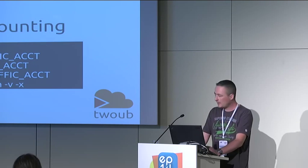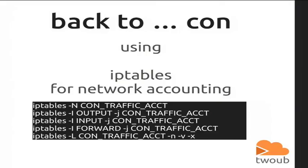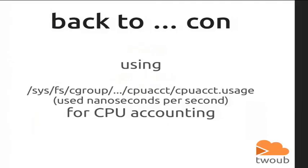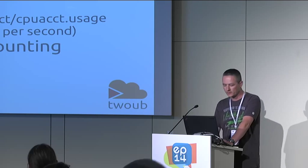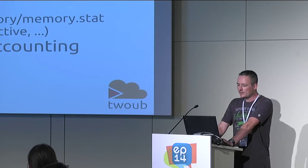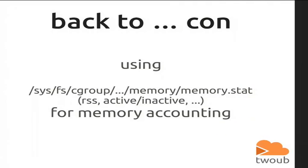CON is using LXC for virtualization, shell-in-the-box for the web console, IP tables for network accounting — all Linux tools. And it's using a lot of the cgroup magic from the Linux kernel for accounting, like the CPU acct group where CPU usage counts nanoseconds per second used on the CPU, and the same for memory, which gives RSS active, inactive memory, file memory, caches, and so on.